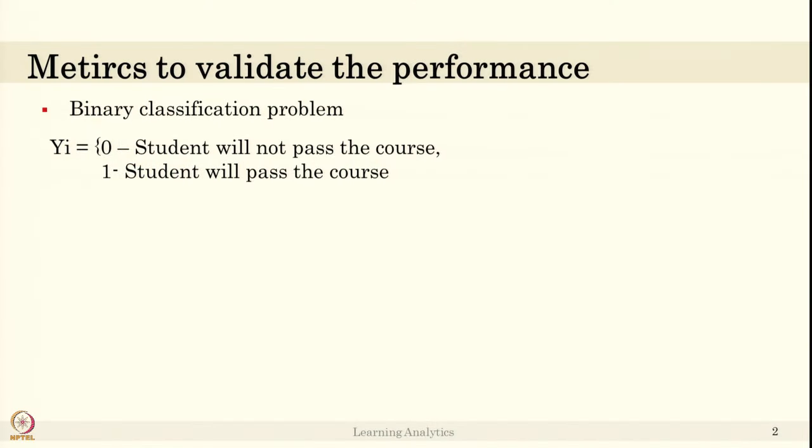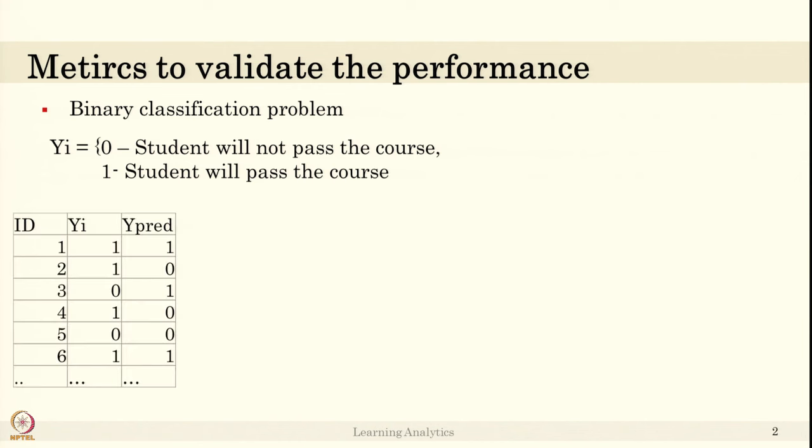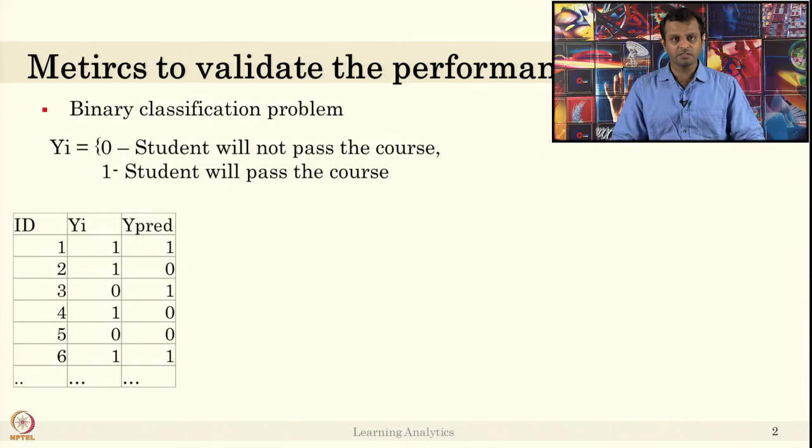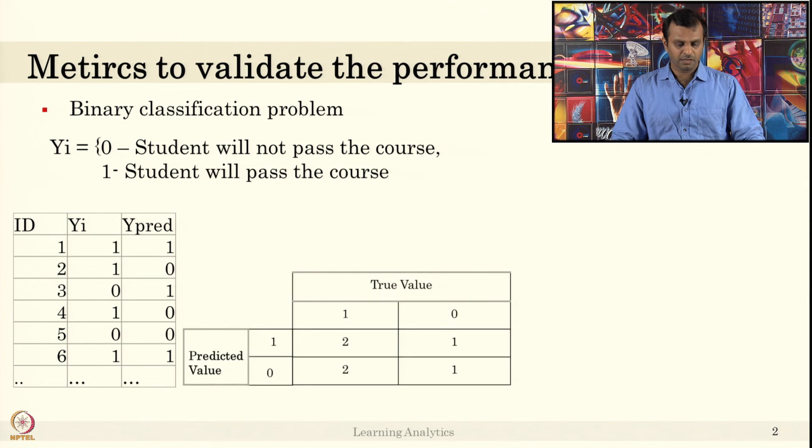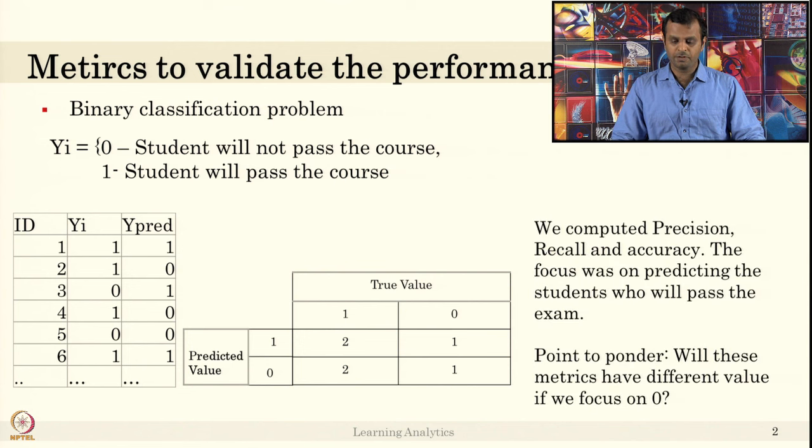Consider there is a binary classification problem. The classes are 0 if the student will not pass the course, 1 if the student will pass the course. There are only two classes, so it is a binary classification problem. You have the table like this where Yi is the actual value and Y predict is the output of the classifier. We computed the confusion matrix and computed precision, recall, and accuracy.